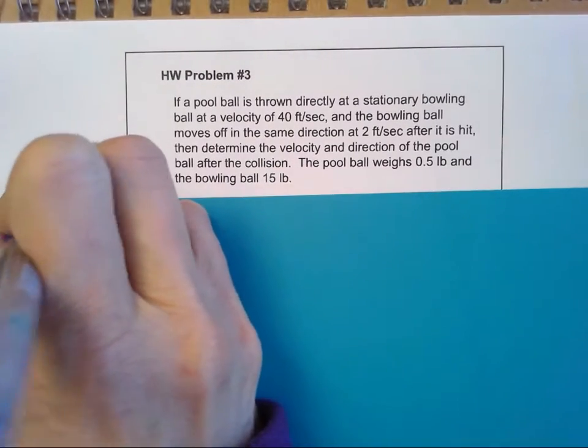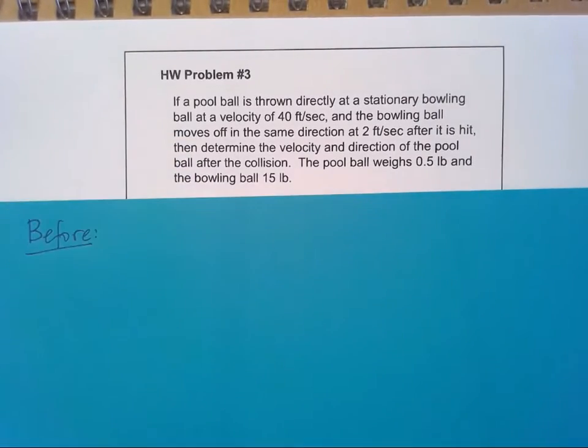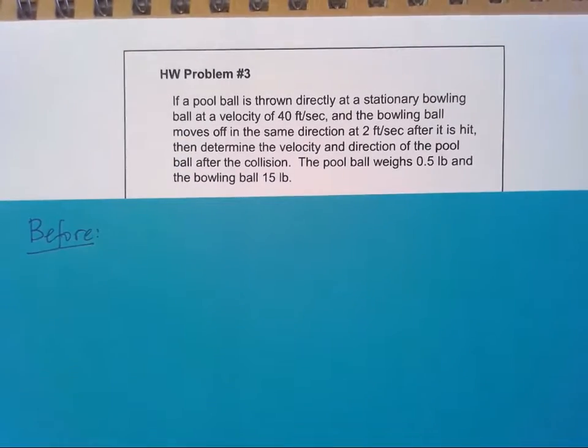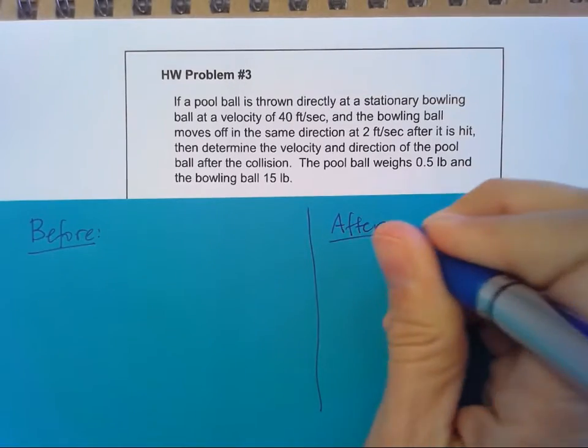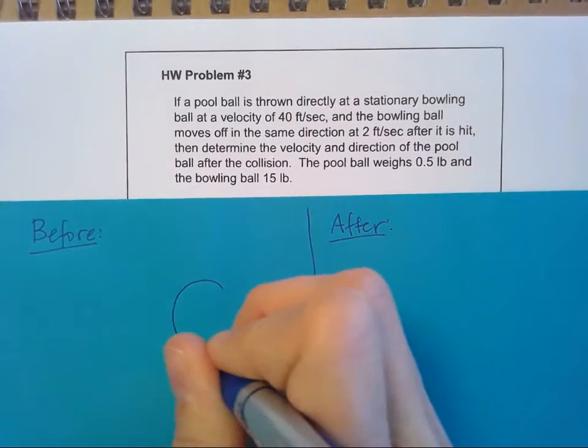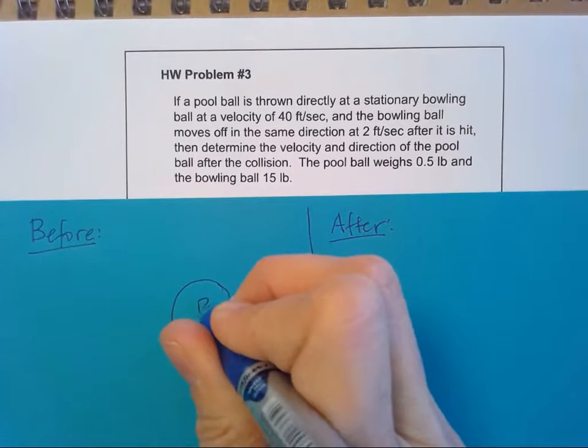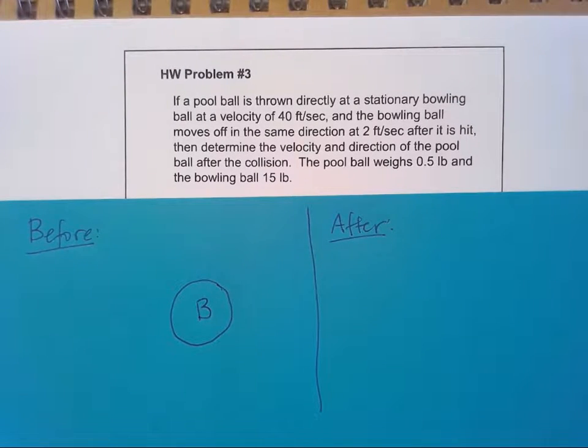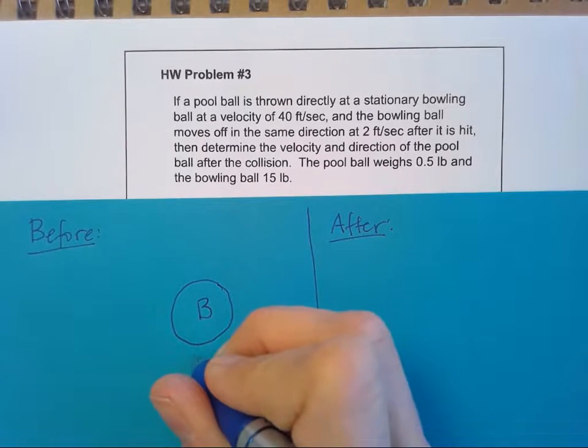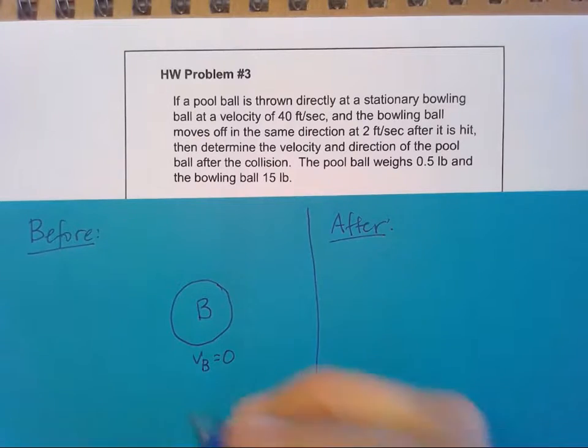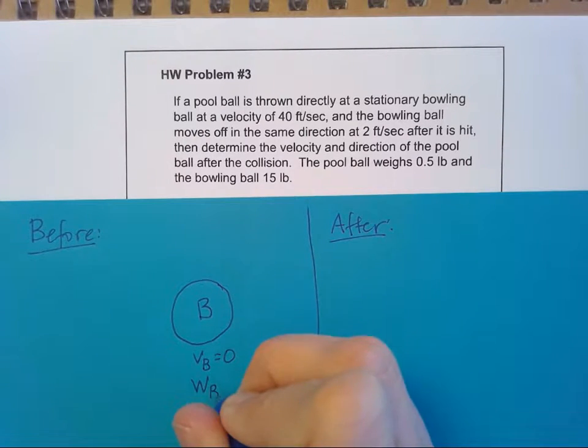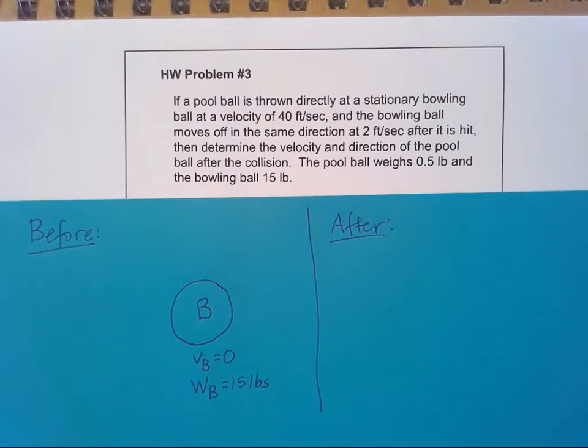So we've got our before situation where we have a pool ball being thrown directly at a stationary bowling ball. And I'll put my after on this side. So I've got my bowling ball, it's pretty big, I'll call it B for the second thing and also B for bowling ball. Its initial velocity is going to be zero, it's stationary.